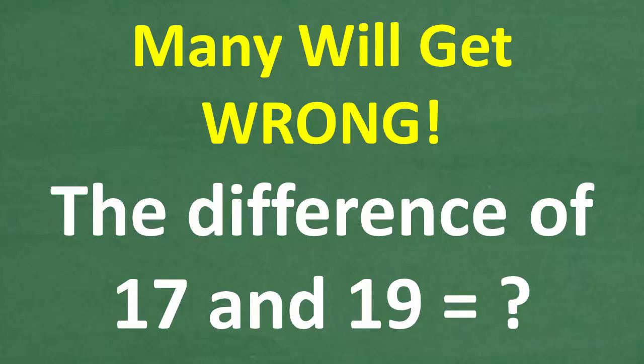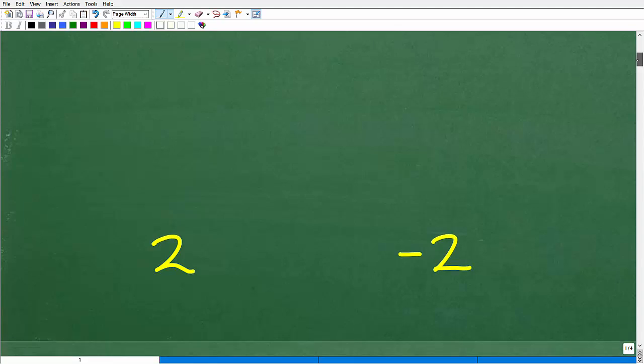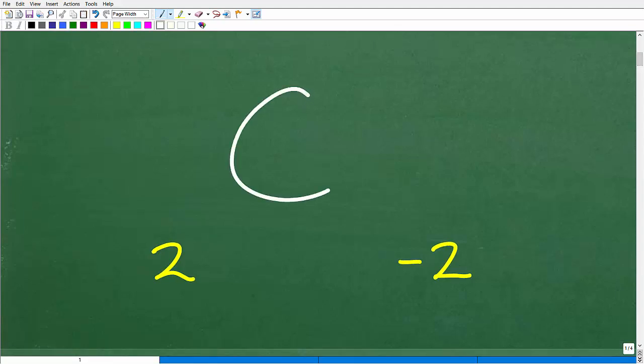So a pretty straightforward question here. The difference of 17 and 19 is equal to - well, the most common answers are going to be one of these numbers right here. Now, somebody got a nice little happy face and an A plus. So who is that?